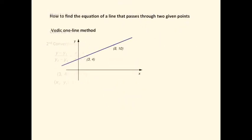The Vedic formula is done in one line, which is great, and the form of the equation is ax minus by equals c. The sutras involved here are transpose and adjust and the product of the means minus the product of the extremes.